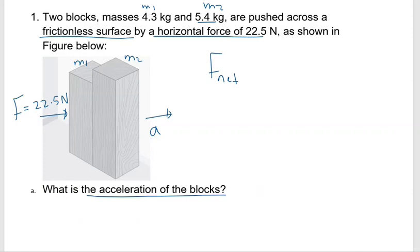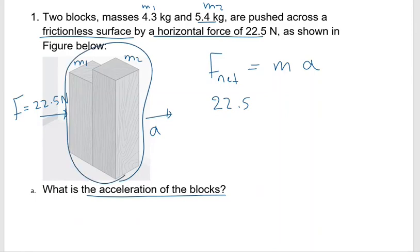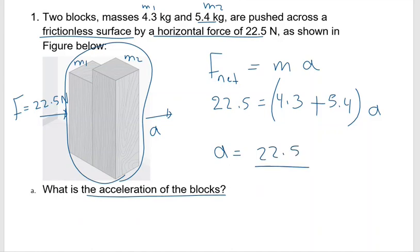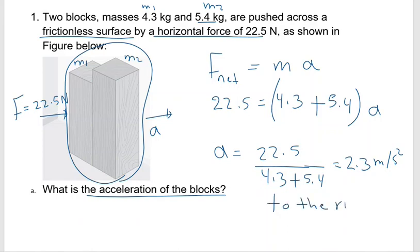The force acting on the system is 22.5 N. Since both blocks move together with the same acceleration, the total mass is M1 + M2 = 4.3 + 5.4. So acceleration = 22.5 divided by (4.3 + 5.4) = 2.3 m/s² to the right.